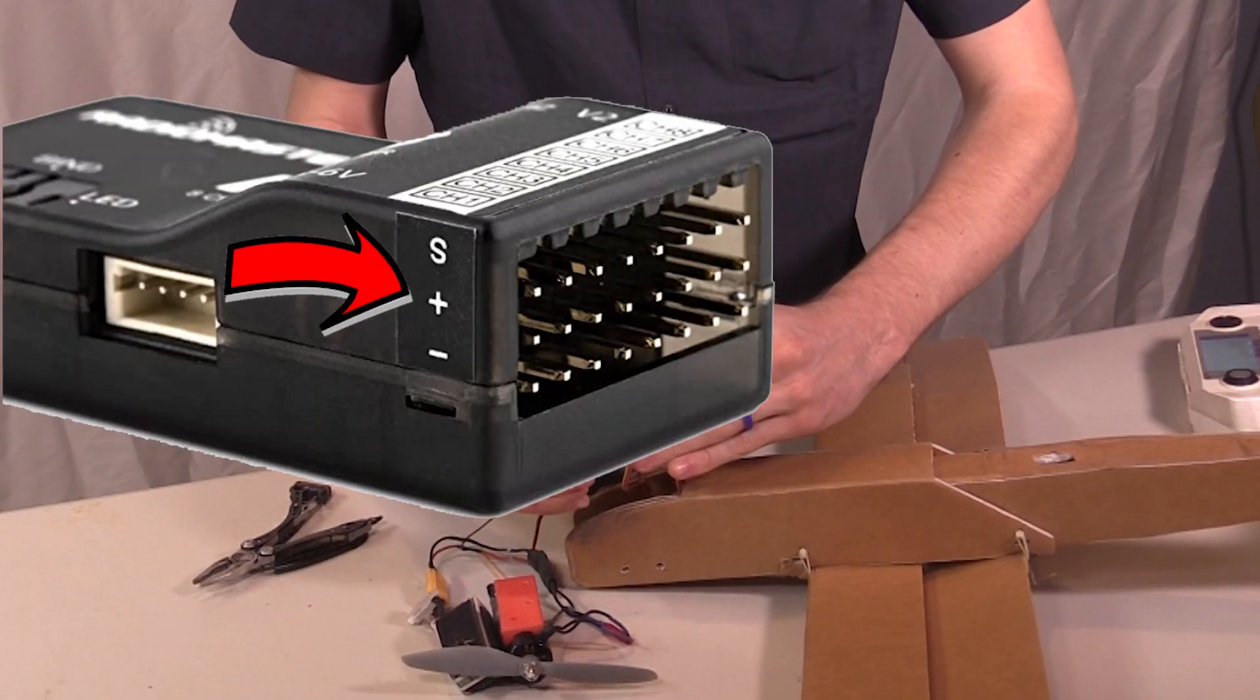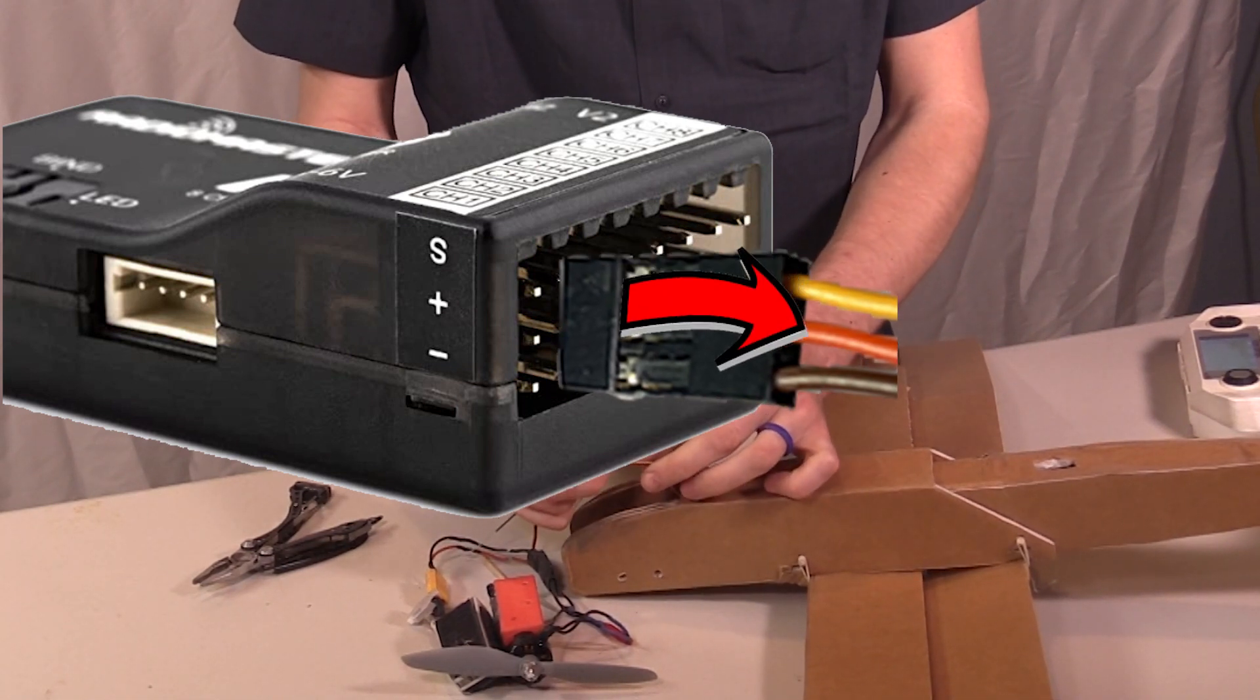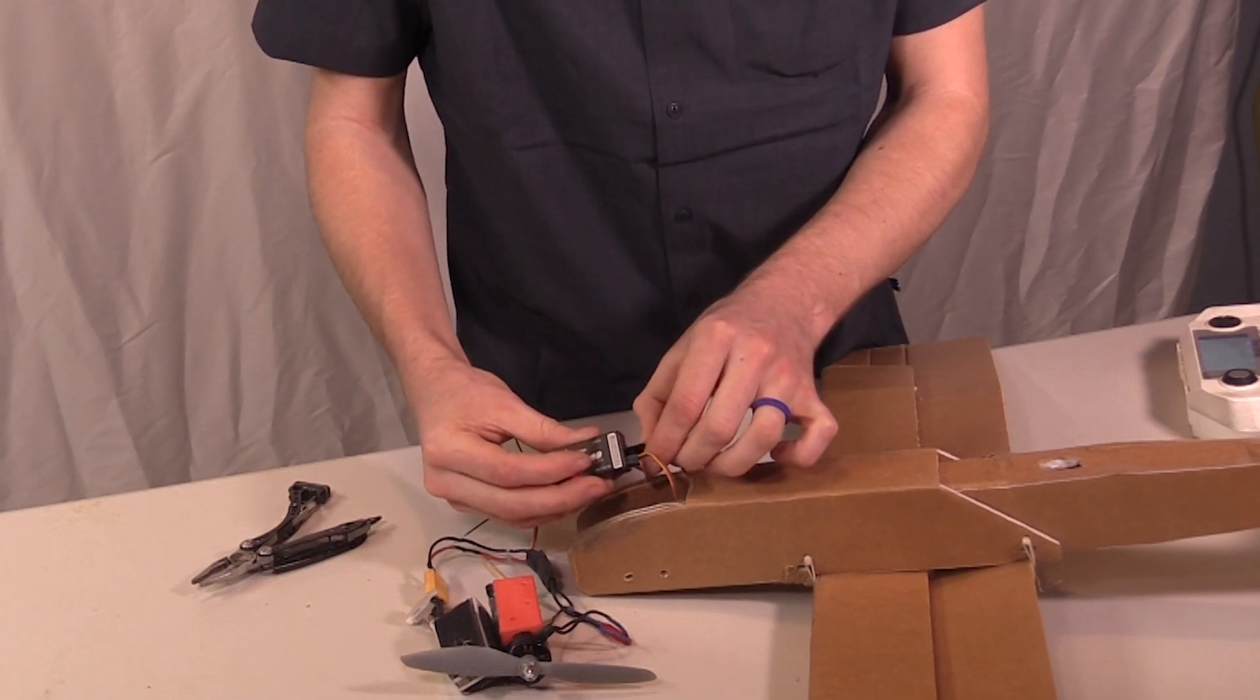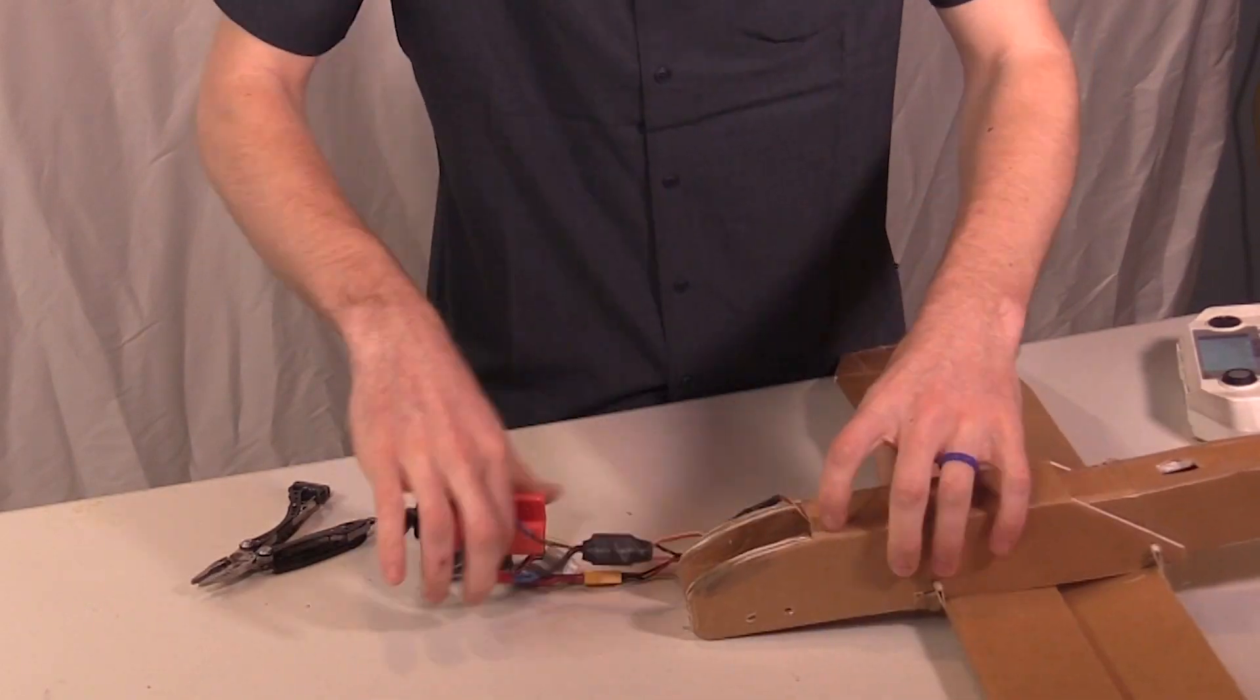And you mainly have to just make sure that you're getting your polarity right. A lot of them say S, positive and negative. So our yellow wire is going to be our signal, red is positive, and black is negative. So we're just going to plug it in appropriately and then we can shove our receiver inside of here.